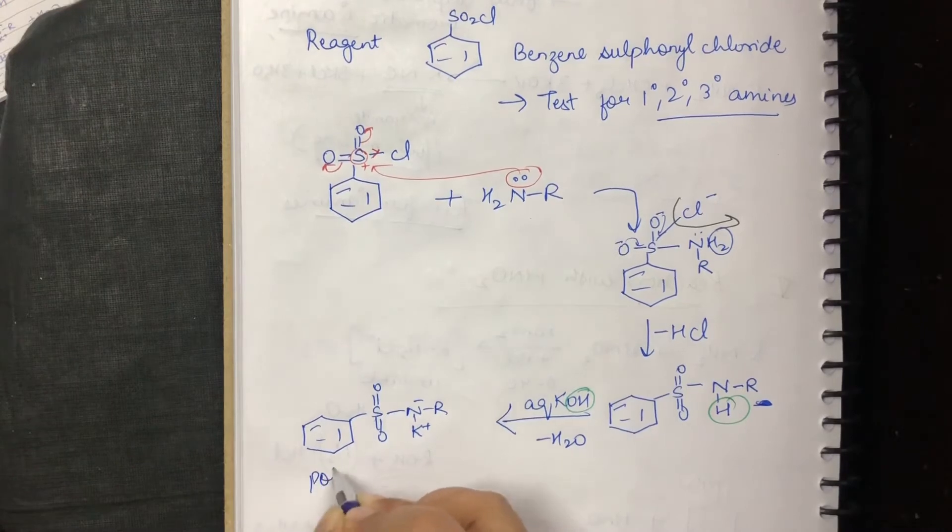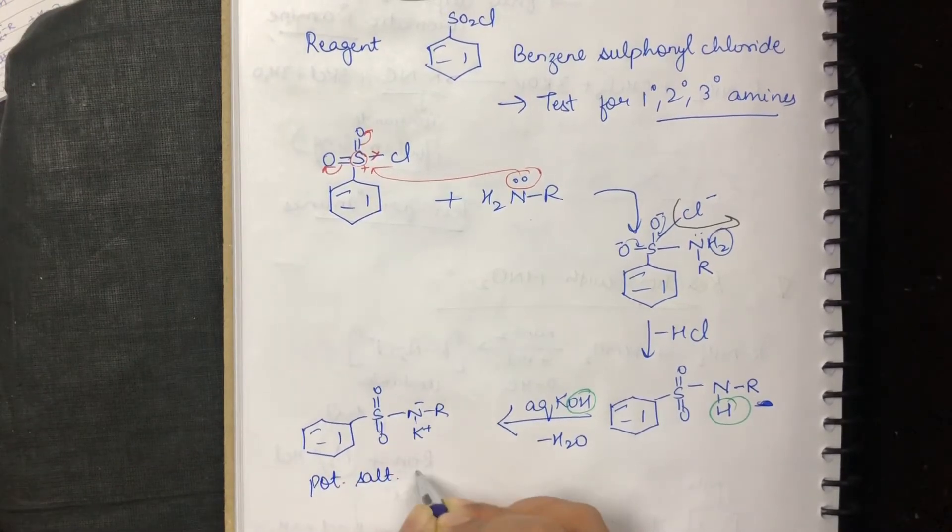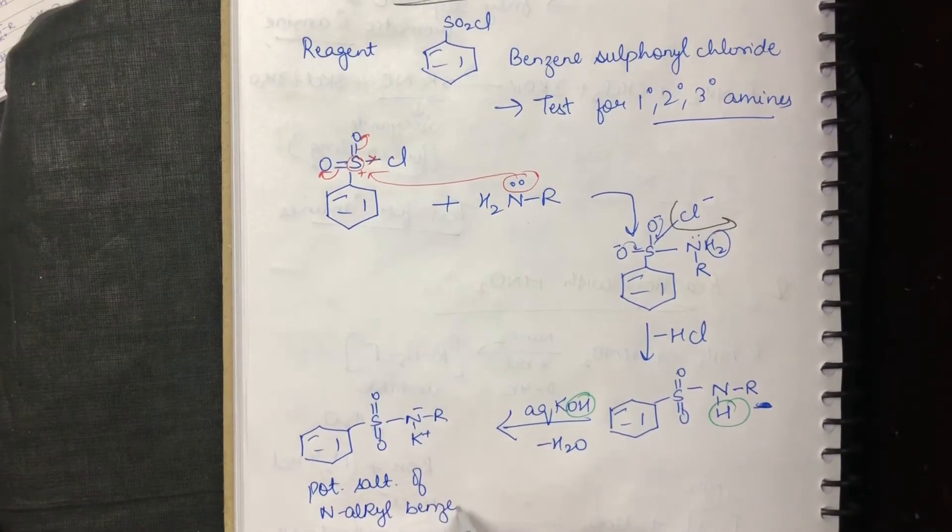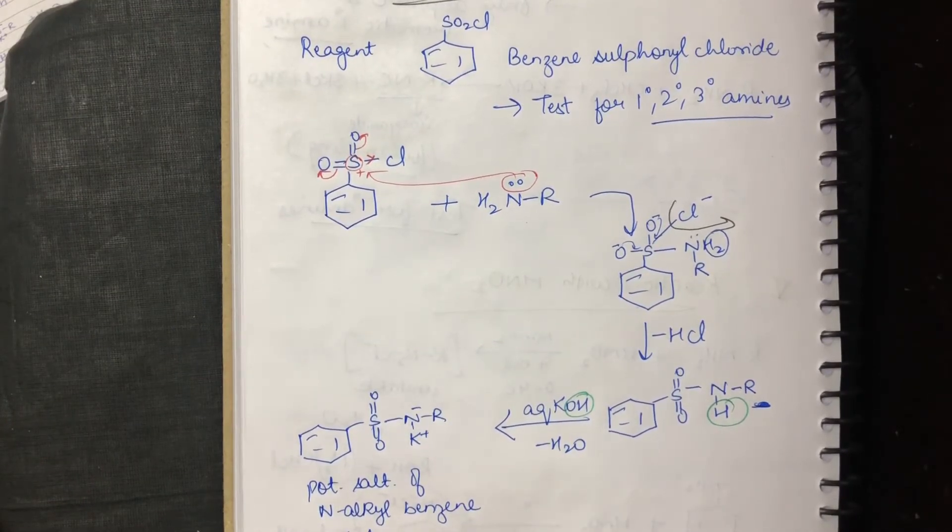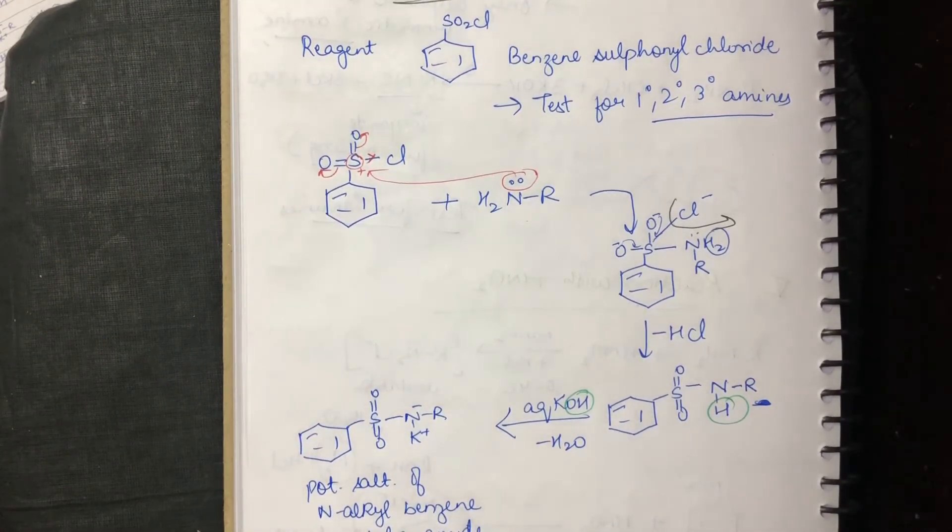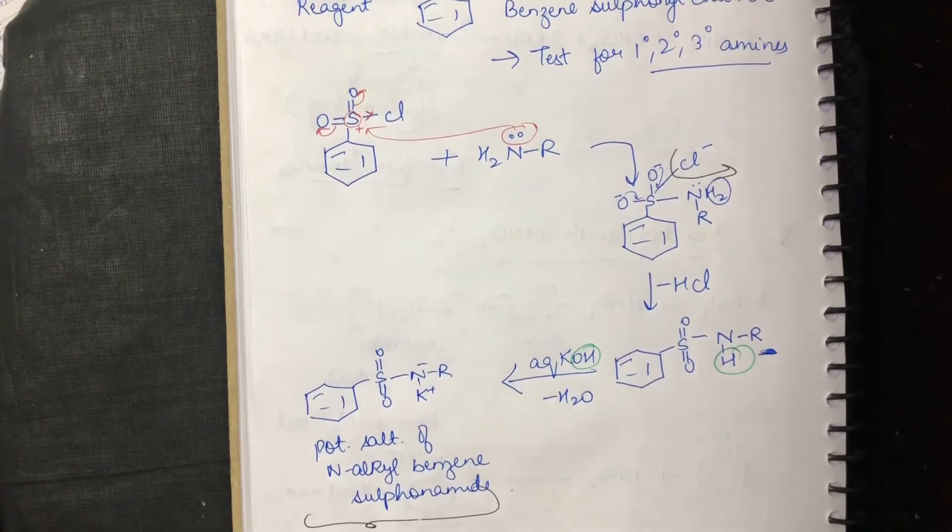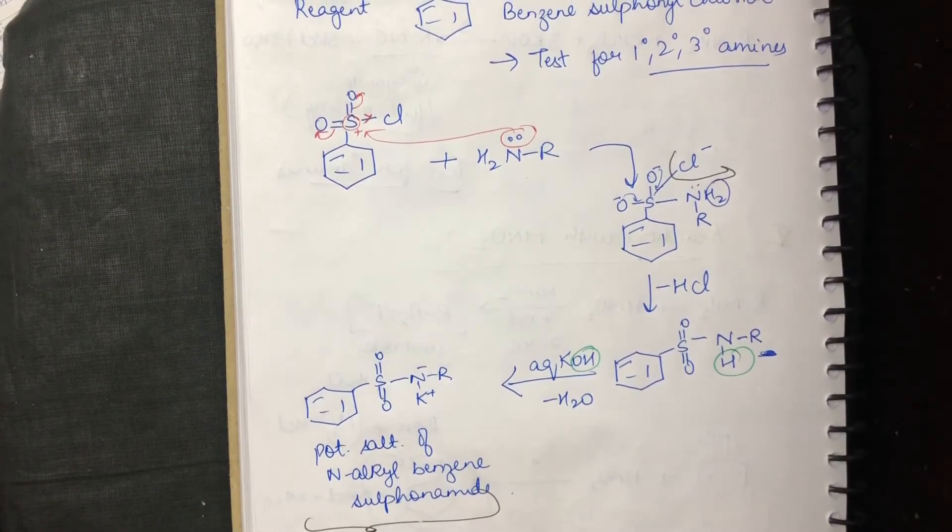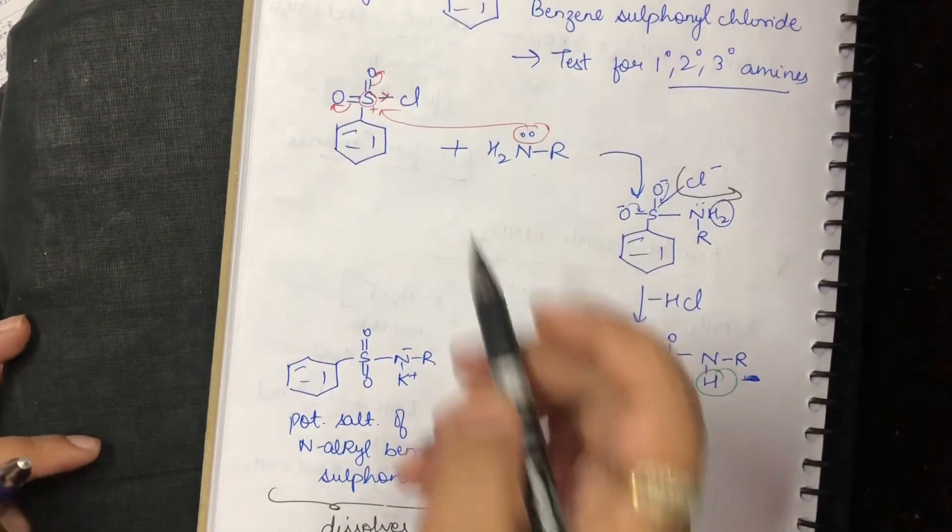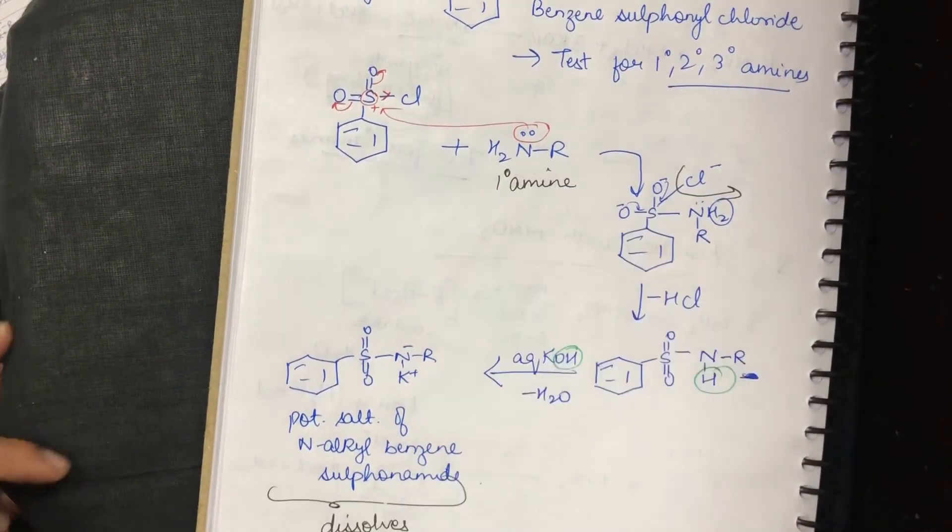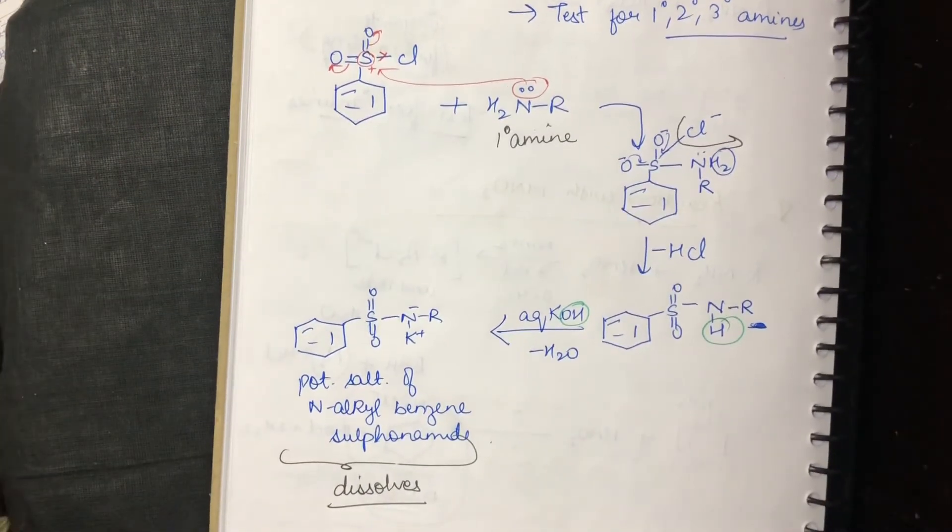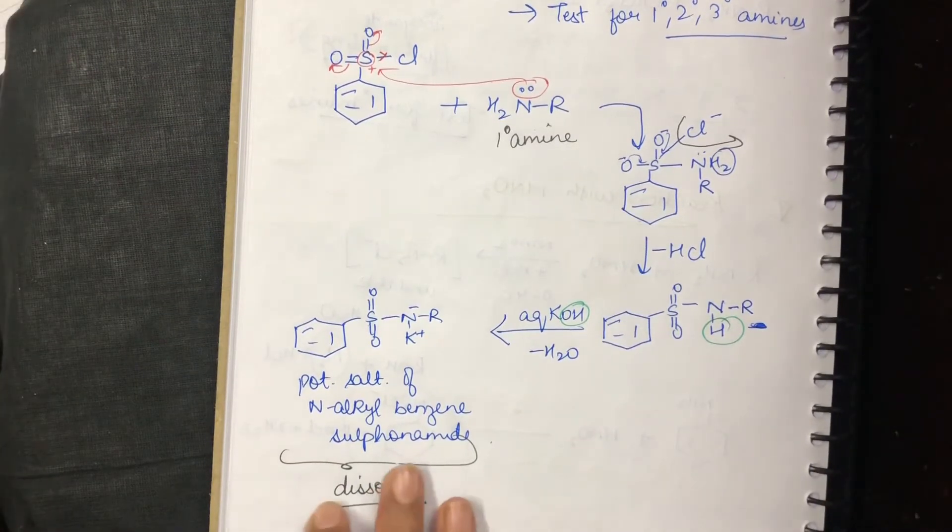This is called as potassium salt of an alkyl benzene sulfonamide. Now, what you have to learn here is that this particular compound dissolves. It is soluble in this KOH. So, whenever you are treating this with a primary amine, your Hinsberg reagent with a primary amine, the product is soluble in the solution.